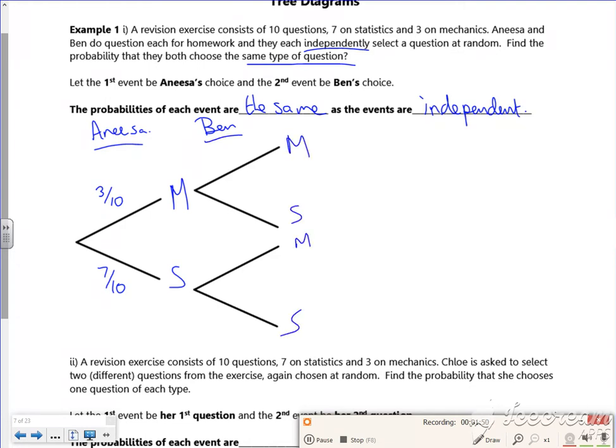Now they're independent of each other, it doesn't matter what Anissa has done. So these probabilities are the same. Right, so what am I going to work out here?